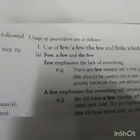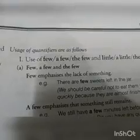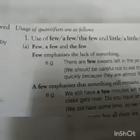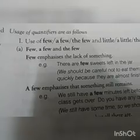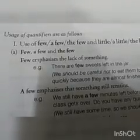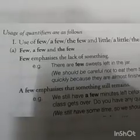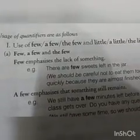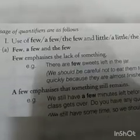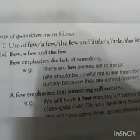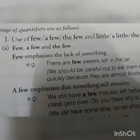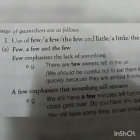We will first look at the use of few, a few, and the few, and then little. The main difference between few and little is: few comes with countable nouns, and little comes with uncountable nouns. Things we can count use few; things we cannot count — like sugar — use little. Things like sweets or pens, which we can count, use few.